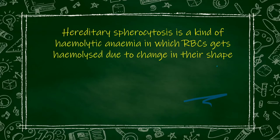Hereditary spherocytosis — as the name suggests, hereditary means it can be inherited from parents to the next generation. And spherocytosis means the shape of RBC which is spherical. So in hereditary spherocytosis, the shape of the RBC becomes a sphere.